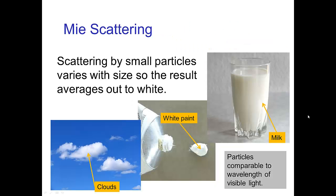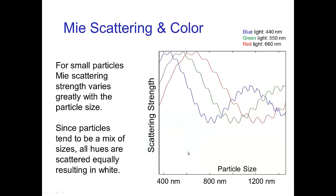For larger particles — still very tiny, but somewhat larger — we have what's known as Mie scattering. Some examples would be the scattering by fat globules in milk, which give it its characteristic white color, scattering by titanium oxide crystals in titanium white paint, and scattering by water droplets in clouds. Here's a similar graph of scattering strength for these larger particles.